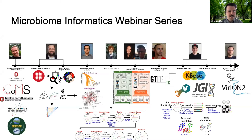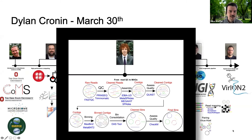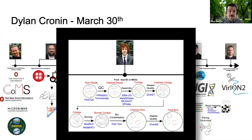This talk is part of the microbiome informatics webinar series. Last week, Dylan Cronin gave a talk on how you can go from raw reads from untargeted metagenomic sequencing through various processing steps to get to a set of bins. What we're going to talk about today is how you can go from that set of bins and start asking questions about what they do — what potential functions these bins encode and how that relates to ecosystem functions, whether you're studying the human gut or permafrost soils.